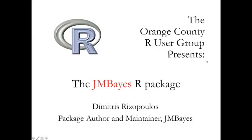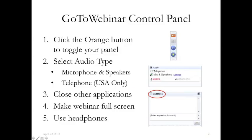Just going to cover some quick logistics before we start the webinar today. All of you have a GoToWebinar control panel. If you click the orange button that has an arrow on it, it will maximize and minimize your control panel. You can click it two or three times and it'll just toggle between a maximized state and a minimized state.